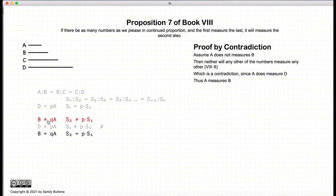So the assumption B does not equal QA was our original assumption, and it does not hold true because it introduced a contradiction, and thus A measures B, or S1 measures S2.